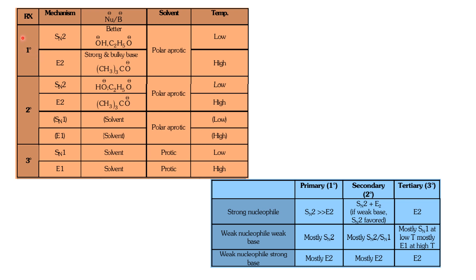For primary halides the mechanism is predominantly SN2. For secondary halides, SN2 and E2 can compete — OH⁻ is the best nucleophile for SN2. E2 requires a strong, bulky base. In polar aprotic solvent, SN2 is favored; if a strong bulky base is used, E2 is favored for secondary halides.